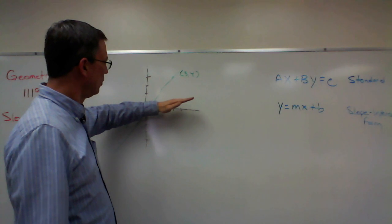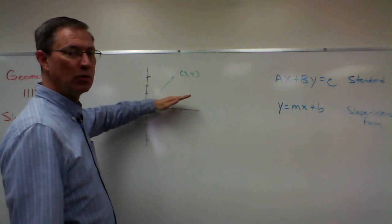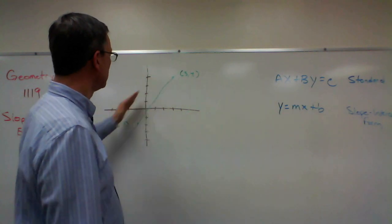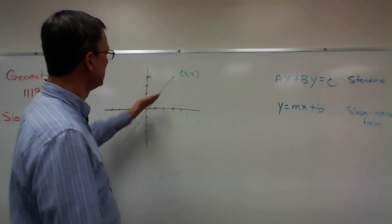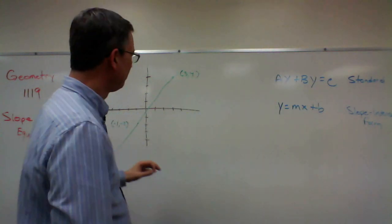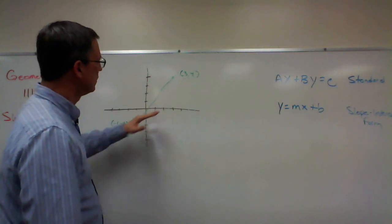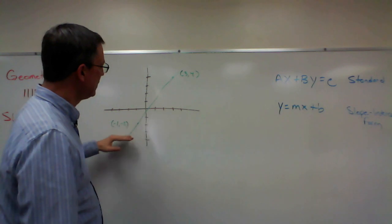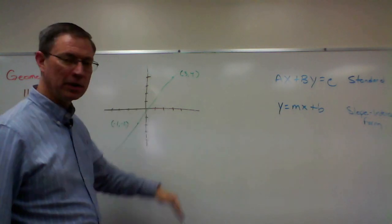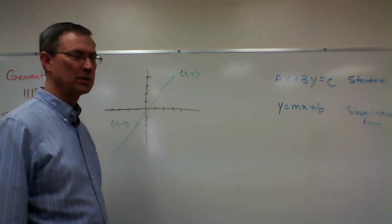If you were hiking, this would be a steep slope to have to hike up. And the higher we get, the bigger the number. Whereas if we lay it more like this, it's a more shallow slope. And all of these, going this direction, are considered a positive slope. So from left to right, you're climbing up.